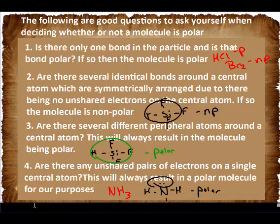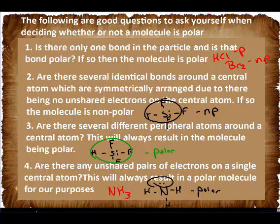And the last one we've already talked about. So you only look at the bond polarity if you only have one bond. Other than that, if you have the same thing all the way around and no lone pairs, it's non-polar. Different things around central atom, then it's polar. And if you have lone pairs on the central atom, then it's going to be polar.